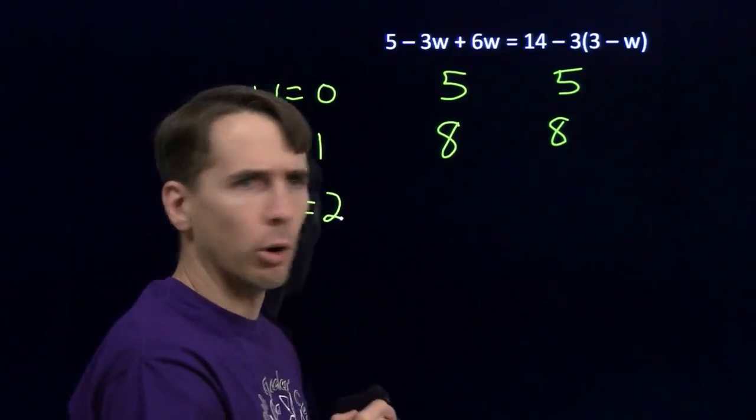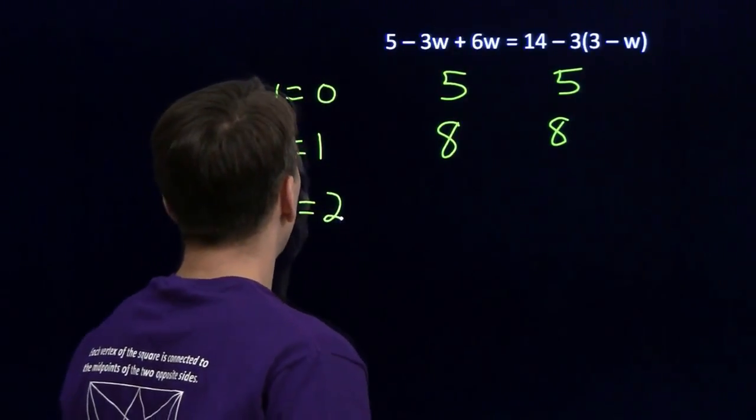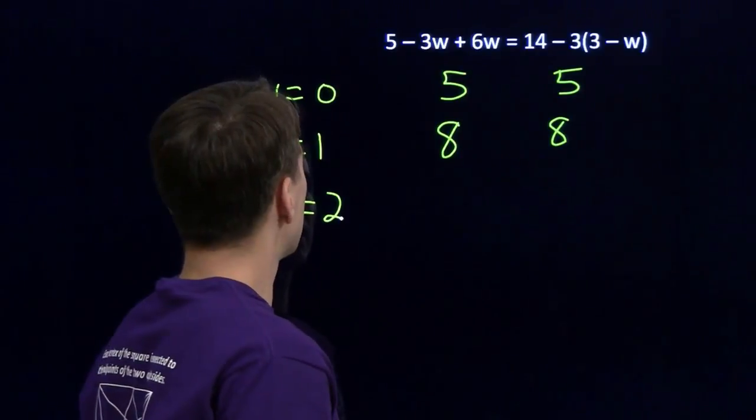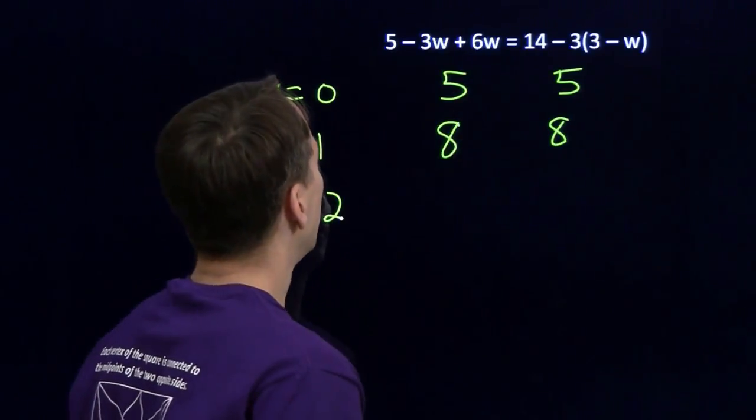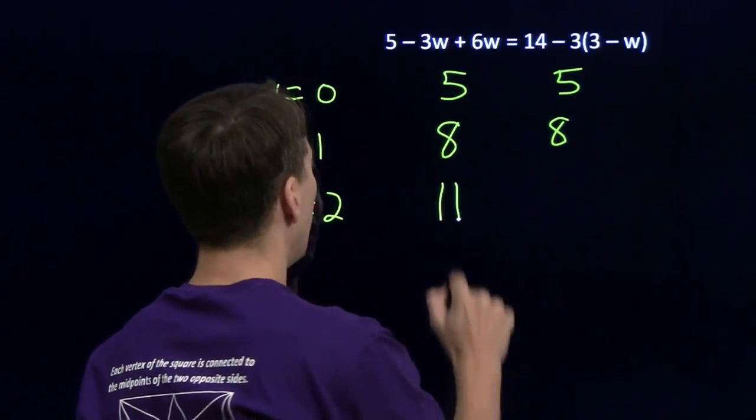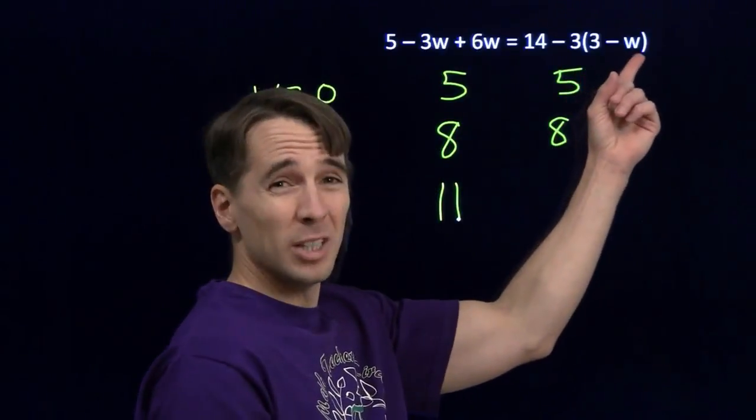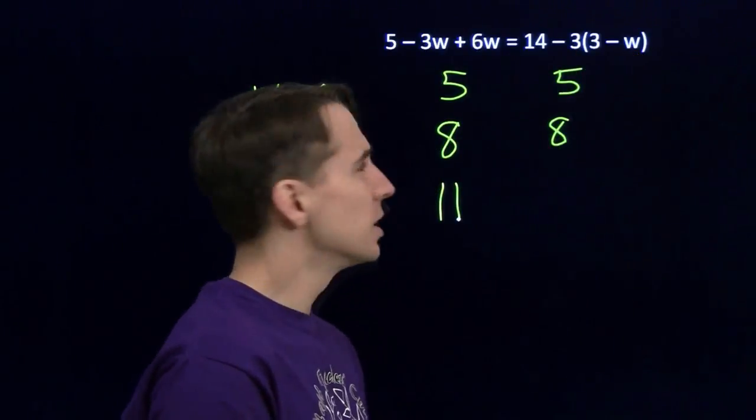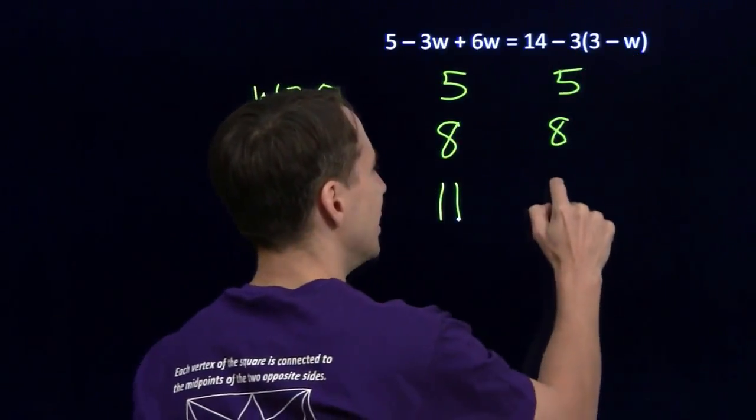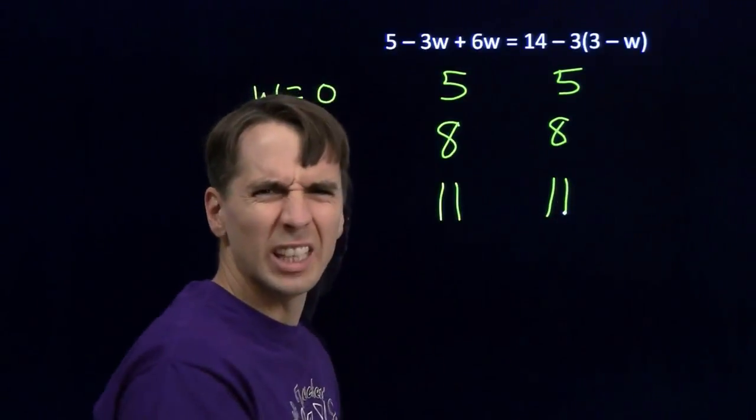Well, I've found two solutions. Maybe there are more. If I put in 2, 5 minus 6 is negative 1, plus 12 is 11. If I put 2 in over here, 3 minus 2 is 1, times 3 is 3. Subtract 3 from 14. Yeah, you guessed it. It looks like everything works.